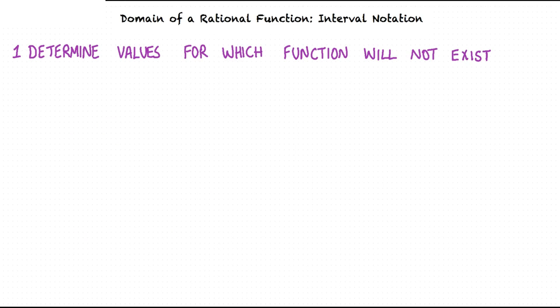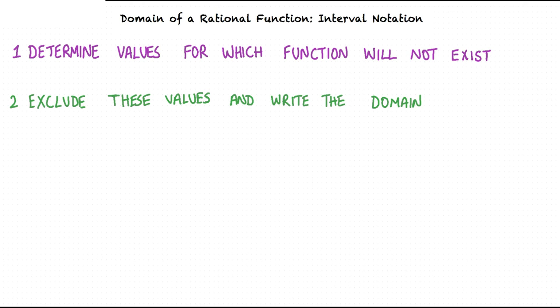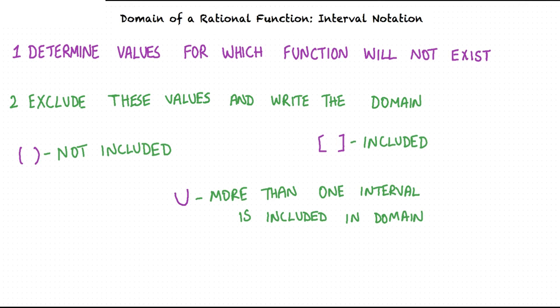In order to represent the domain of a rational function in interval notation, we first determine the values for which the function will not exist. Then, we exclude these values and write the domain. We use parentheses when the number is not included, and we use brackets when the number is included in the domain. We use the union symbol if there is more than one interval included in the domain.